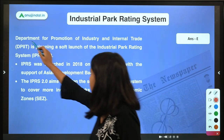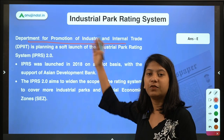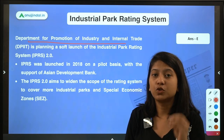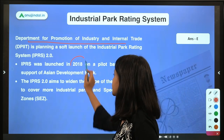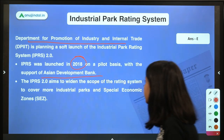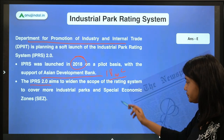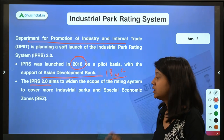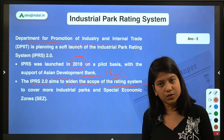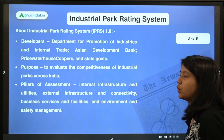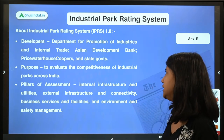The Department for Promotion of Industry and Internal Trade (DPIIT) is the department responsible for the Industrial Park Rating System. This IPRS assesses the competitiveness of industrial parks in India. It was first launched in 2018 on a pilot basis with the help of the Asian Development Bank and PwC. The government aims to launch IPRS 2.0 to increase its scope to include more industrial parks and Special Economic Zones.